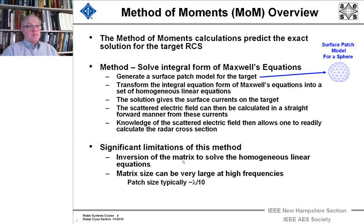There are limitations to this method. In solving this set of homogeneous linear equations, we're going to have to invert a matrix. If there are n pieces, there are going to be n simultaneous homogeneous linear equations to solve. And so that's going to be an n by n matrix. And that's not going to be easy, and particularly at high frequencies.